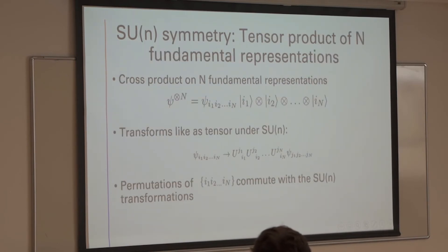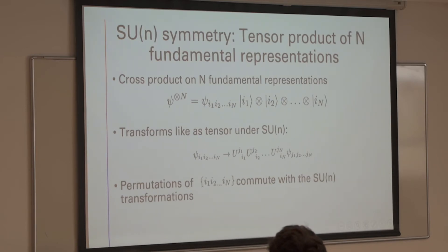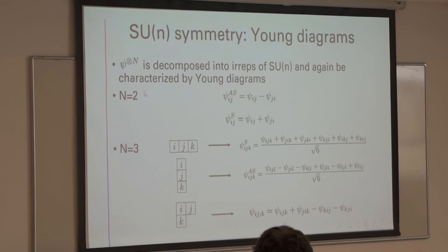If we look at the tensor product of N fundamental representations — where N is the number of sites — it's also a tensor and transforms as such. Here we have the symmetry of permuting these indices, and actions of SU(N) commute with permutation of indices. So again we have this permutation symmetry that dictates that the irreducible representations of SU(N) correspond to Young diagrams. For N equals 2 we have the anti-symmetric tensor and the symmetric tensor; for N equals 3 we have those same symmetric and anti-symmetric tensors plus a tensor of mixed symmetry that corresponds to the hook diagram.